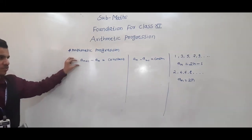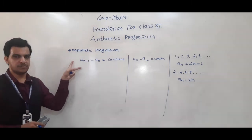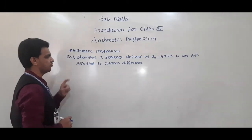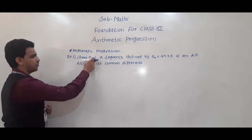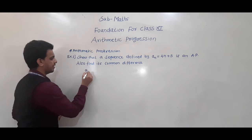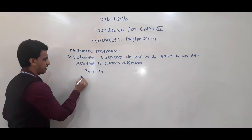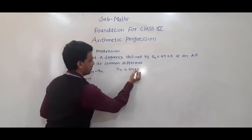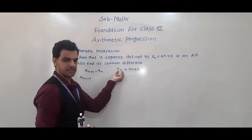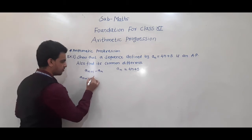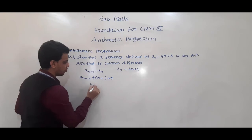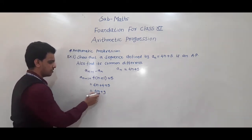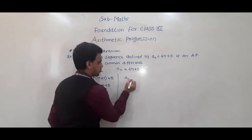We will take some examples. Here is an example: Show that the sequence defined by an = 4n + 5 is an AP, and find the common difference. To check, we need to find a(n+1) − an. First, finding a(n+1): since an = 4n + 5, replace n by n+1, so a(n+1) = 4(n+1) + 5 = 4n + 4 + 5 = 4n + 9.